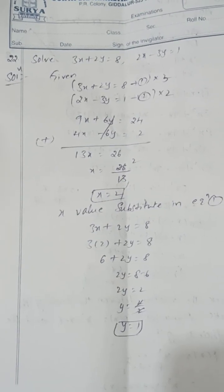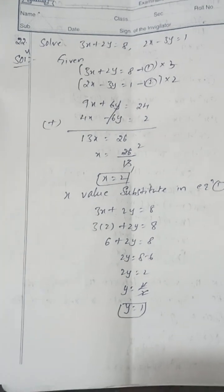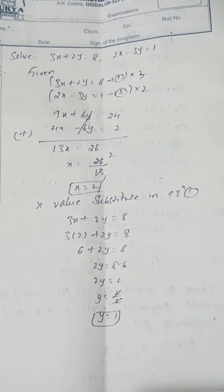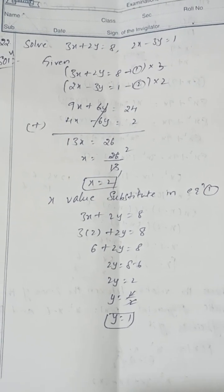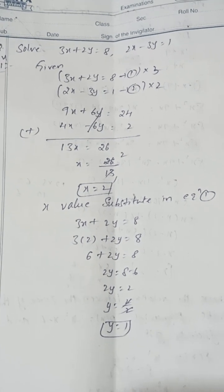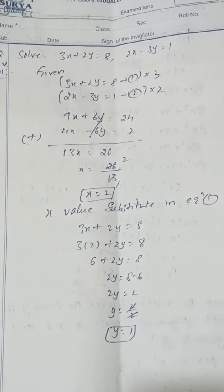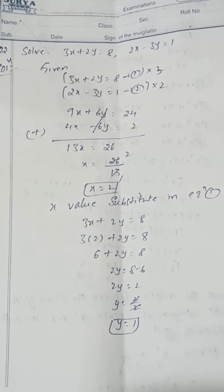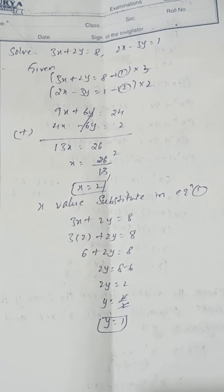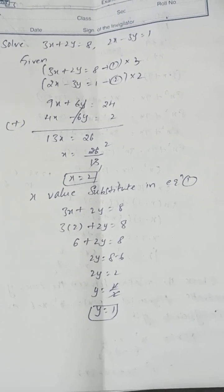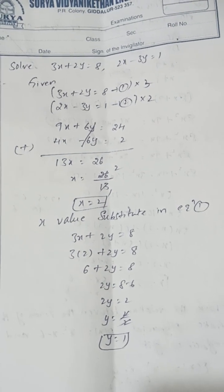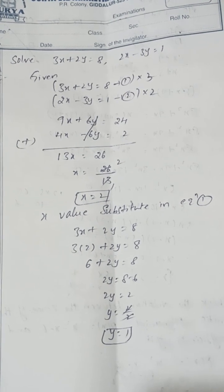Solve 3x + 2y = 8 and 2x − 3y = 1 using the elimination method. Multiply the first equation by 3 and the second by 2: 9x + 6y = 24 and 4x − 6y = 2. Adding: 13x = 26, so x = 2. Substituting x = 2 into equation 1: 6 + 2y = 8, so 2y = 2, y = 1.